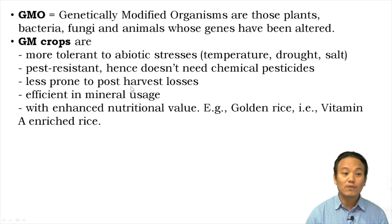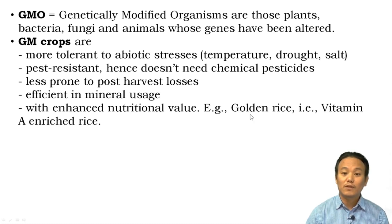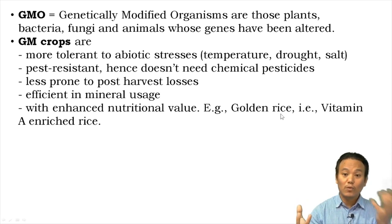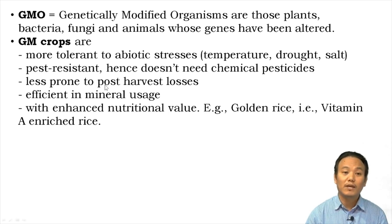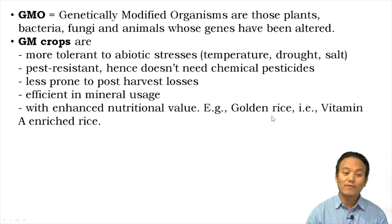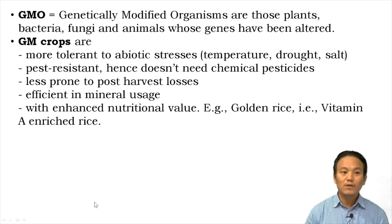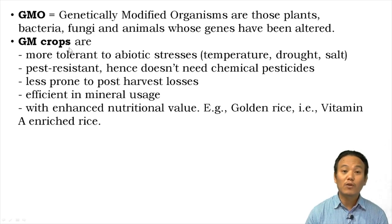Lastly, genetically modified crops are designed with enhanced nutritional value. For example, golden rice — one of the genetically modified crops — is vitamin A enriched. Compared to normal rice, golden rice has a higher amount of vitamin A because it is genetically engineered to have a higher content of vitamin A.